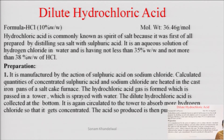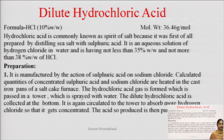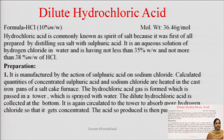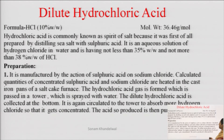Next is dilute hydrochloric acid. Formula HCl, 10% weight by weight. Its molecular weight is 36.46 grams per mole. Hydrochloric acid is also called spirit of salt, because when it was prepared, it was sea salt distilled with sulfuric acid. It is an aqueous solution of hydrogen chloride in water, having not less than 35% w/w and not more than 38% w/w of hydrochloric acid.